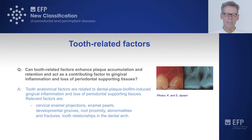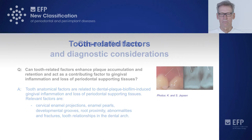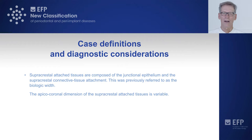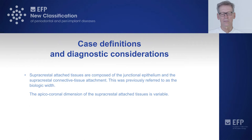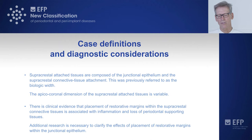Coming to case definitions and diagnostic considerations: supracrestal attached tissues are composed of the junctional epithelium and the supracrestal connective tissue attachment — previously referred to as the biologic width, now called the supracrestal attachment. The apico-coronal dimension of the supracrestal attached tissues is variable. There is evidence that placement of restorative margins within the supracrestal connective tissues is associated with inflammation and loss of periodontal supporting tissues, so this should be avoided.